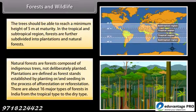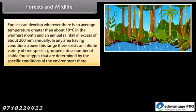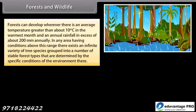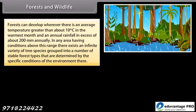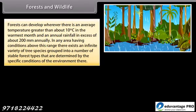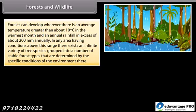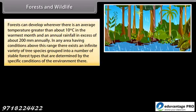There are about 16 major types of forests in India from the tropical type to the dry type. Forests can develop wherever there is an average temperature greater than about 10 degrees Celsius in the warmest month and an annual rainfall in excess of about 200 mm annually. In any area having conditions above this range, there exists an infinite variety of tree species grouped into a number of stable forest types that are determined by the specific conditions of the environment.